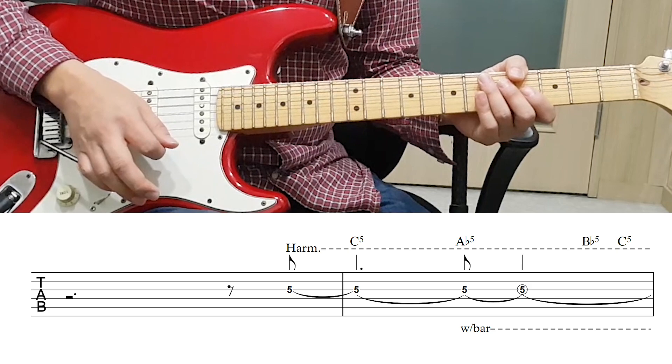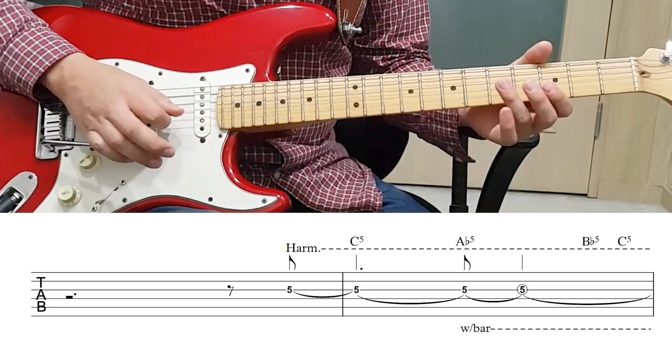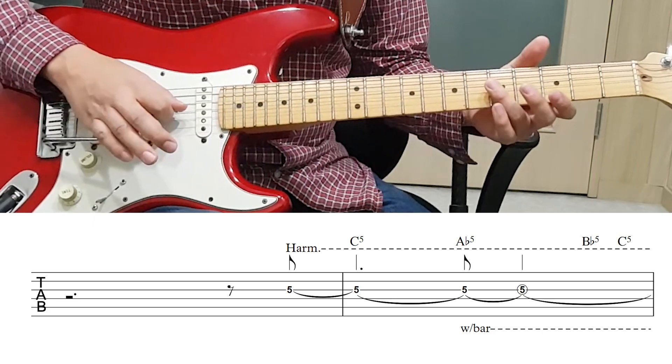오늘은 본조비의 You Give Love A Bad Name 솔로를 배워보도록 하겠습니다. 3번 줄에 5프렛, Natural Harmonics로 시작합니다.